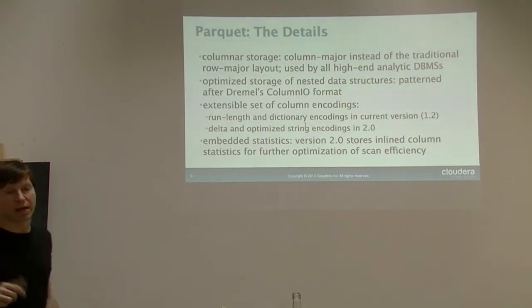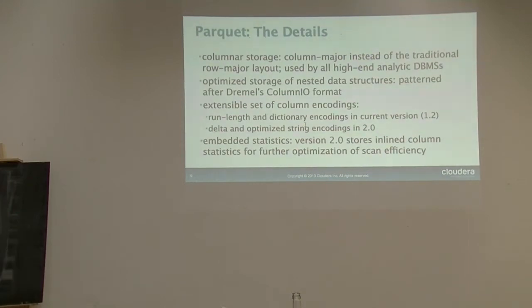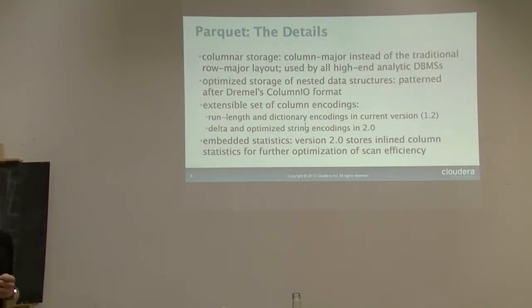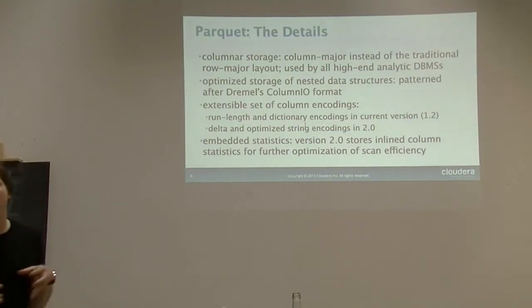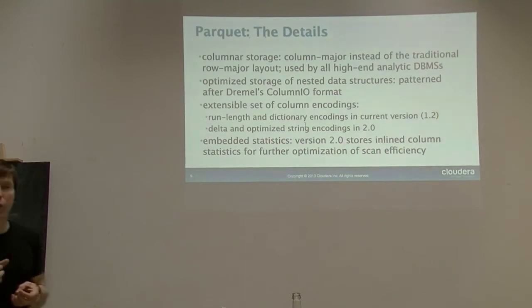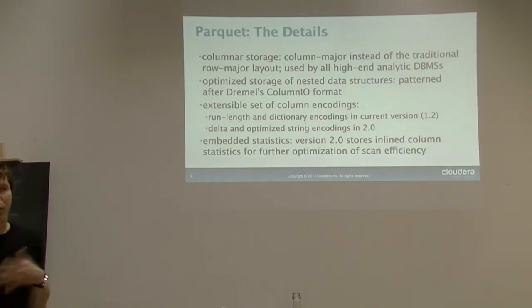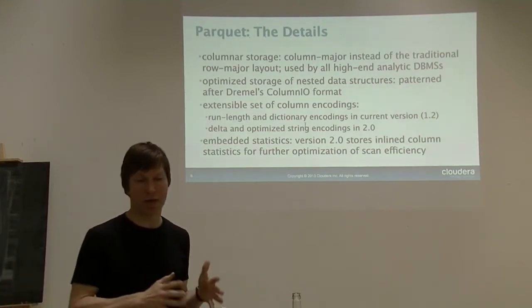Parquet is open source and is now an Apache incubator project, with contributions from companies such as Criteo, Stripe, Berkeley AMPLab, and LinkedIn—which is moving toward Parquet storage internally—and Netflix. It's already in production at Twitter and Criteo. Parquet was specifically designed to efficiently store nested data from serialization formats such as Avro, Thrift, Protocol Buffers, or JSON. It adopts the nesting representation pioneered in Dremel's ColumnIO, maintaining columnar properties so that scanning a single deeply nested column only requires accessing that column's data on disk.